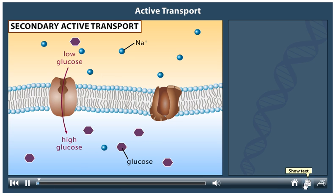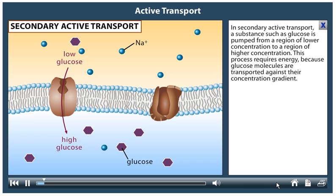In secondary active transport, a substance such as glucose is pumped from a region of lower concentration to a region of higher concentration. This process requires energy because glucose molecules are transported against their concentration gradient.